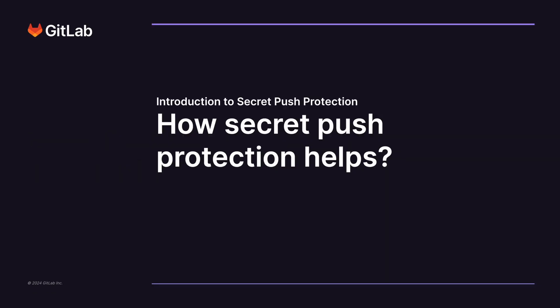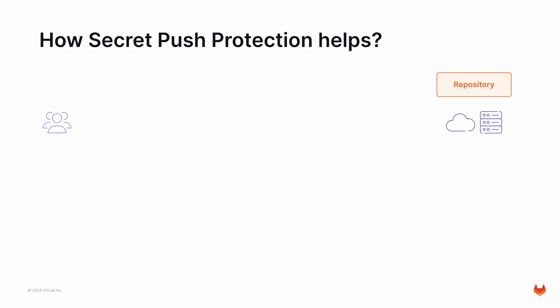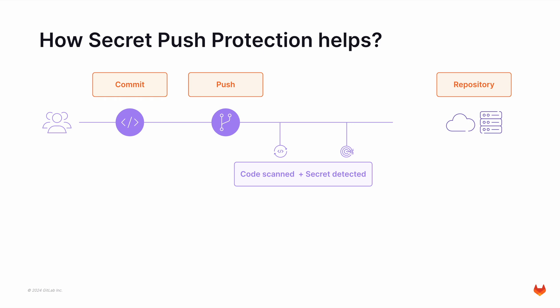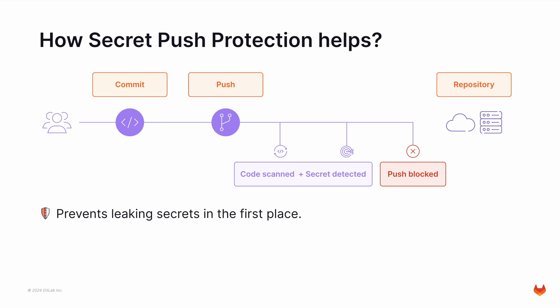So where does Secret Push Protection fit, or how does it help? In a normal scenario, a developer would commit their code and then try to push that code to a repository, and this would work just fine. But what happens if the commit included some type of a secret by mistake? In such a case, the secret would already be leaked. To prevent this and to make sure no secrets are leaked, Secret Push Protection scans the code after it is pushed and before it is committed to a repository. If the code did indeed contain a secret, then the push is blocked. This means we prevent secrets before they are leaked in the first place.